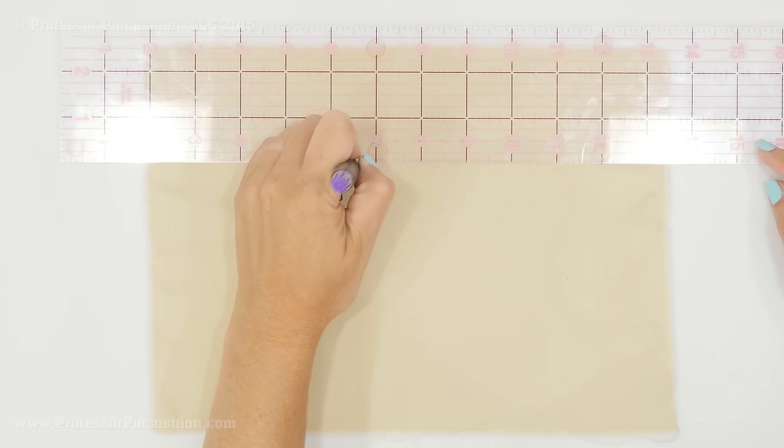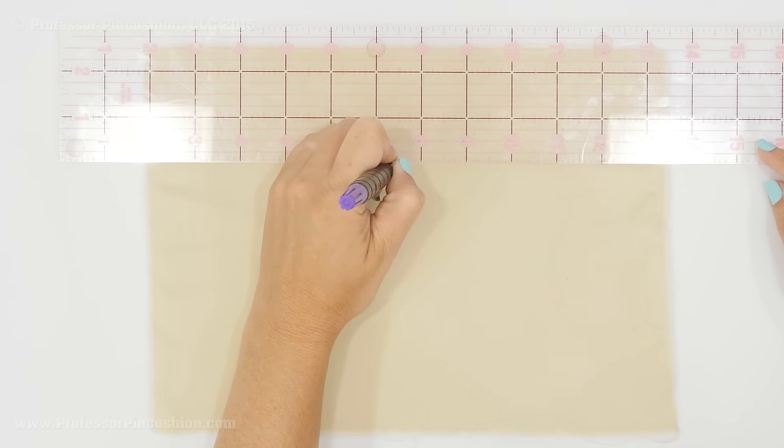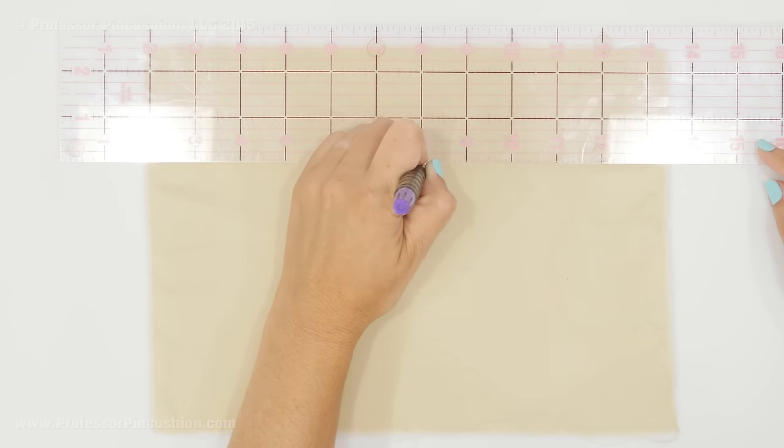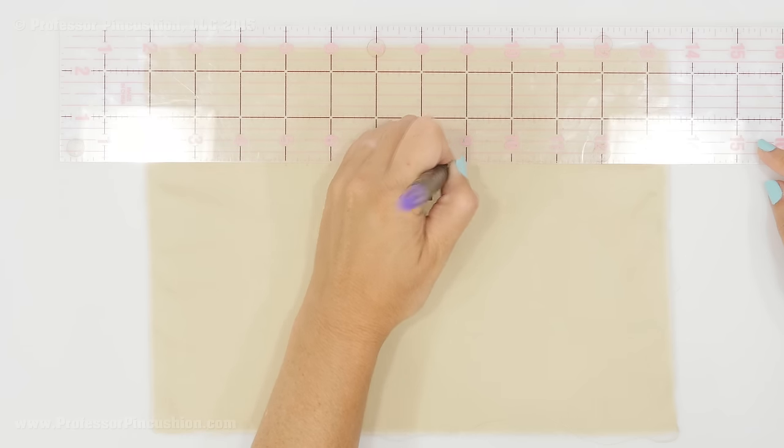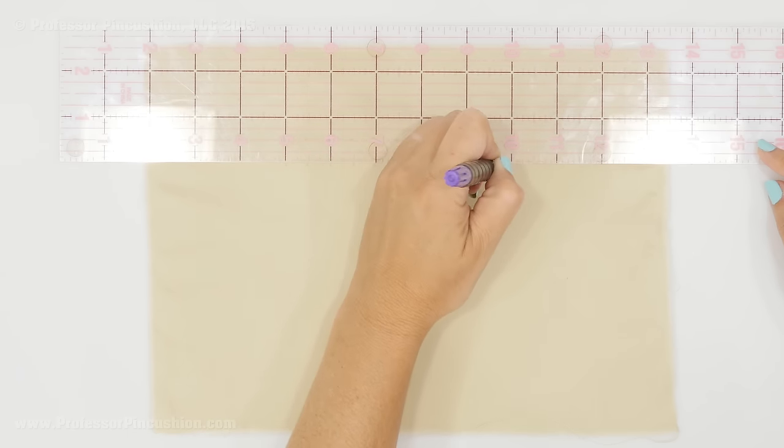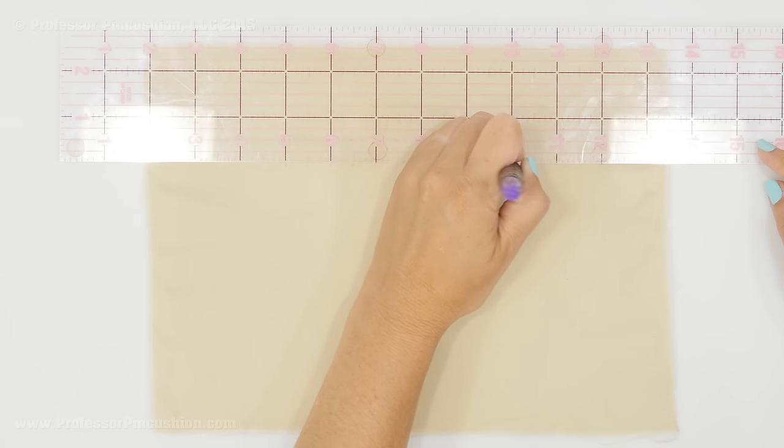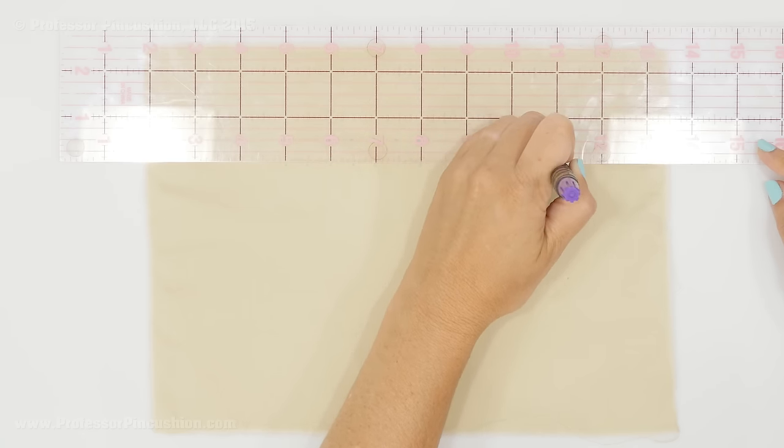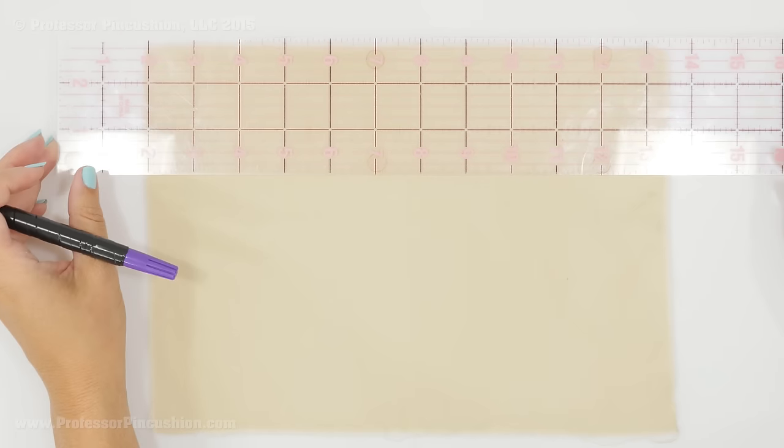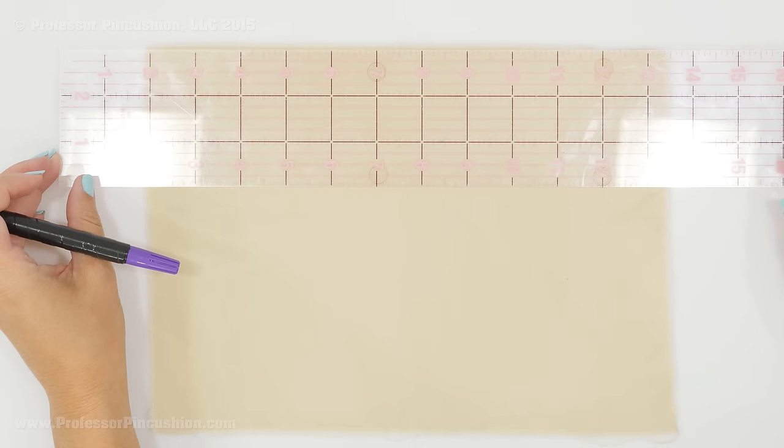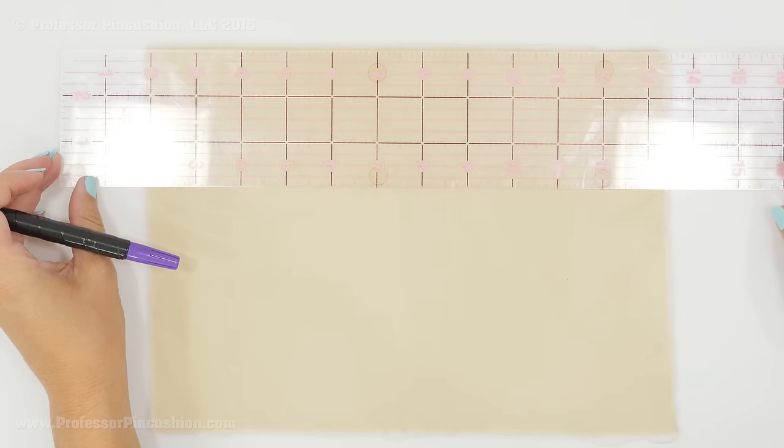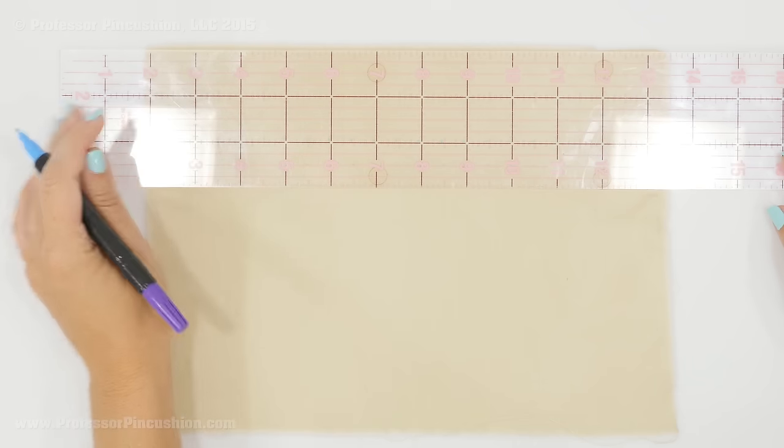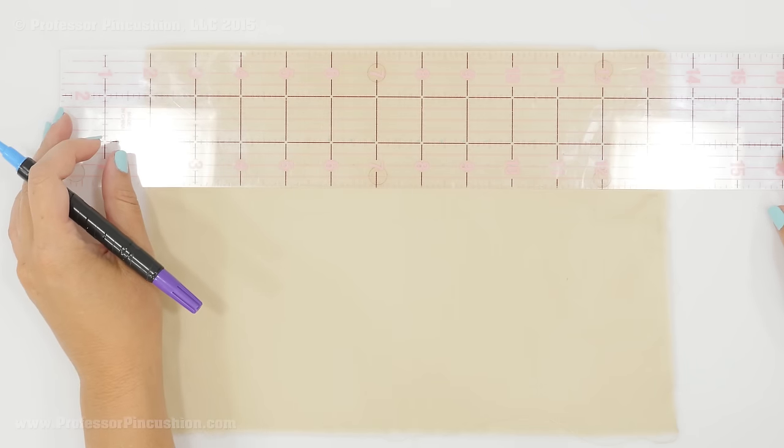And I'm just doing a half inch but you could do an inch, you can do smaller than that. The closer your dots are, the more pleats you're going to have. And then the smaller your diamond shape is going to be. So that's the next row, so now I'm just going to do the same thing, moving down another half inch. And you're just going to do this for the whole area that you want this design to be in.